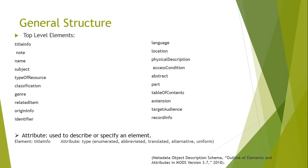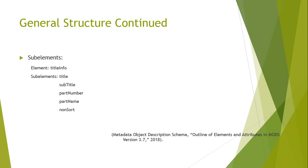Each of these top-level elements has attributes. An attribute is something used to describe or specify an element. Included in some of the top-level elements are sub-elements. For instance, the top-level element title info has sub-elements called title, subtitle, part number, part name, and non-sort. As long as one element is present, all top-level elements and attributes are optional. Sub-elements are optional as well. Repeating elements is permitted unless otherwise stated in the description.